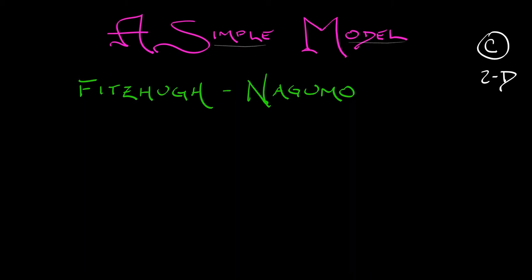The first model we're going to look at is a simple model, a classic model, a model by Fitzhugh and Nagumo. This is a continuous time model in 2D. Wow, this is going to be so easy because it's just 2D, right?